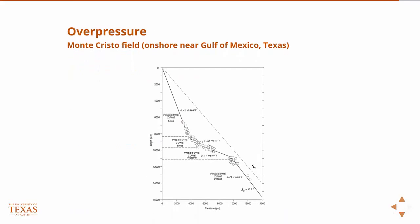This is a pressure log from Monte Cristo field, which is onshore in Texas near the Gulf of Mexico, and it's pretty characteristic of what you see in almost all Gulf of Mexico type formations. You can see it's initially hydrostatic. The slope of this line is 0.46 PSI per foot — very near what we define as hydrostatic.